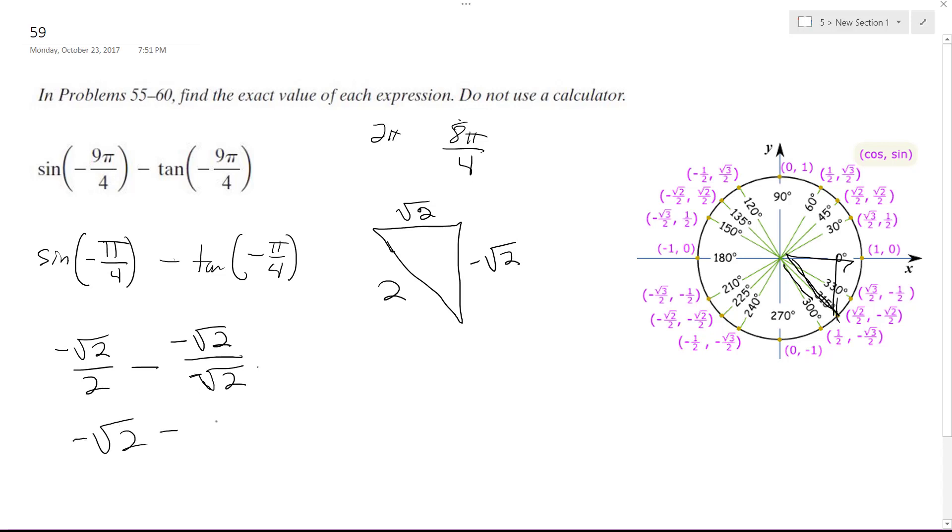So I'm going to rationalize the denominator, get common denominators, so this becomes negative 2 over 2. So essentially this just becomes negative √2, and then the minus negative 2 becomes plus 2 over 2.